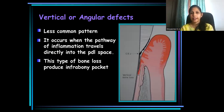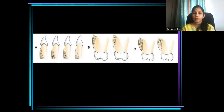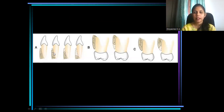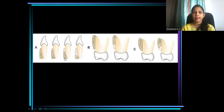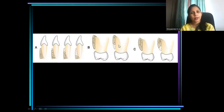Vertical defects or angular defects occur whenever the inflammation travels into the periodontal ligament area, and such bone loss produces an infrabony pocket. Such angular bony defects are not commonly seen in the lower anterior area, because that area usually does not have much cancellous bone — the cortical plates are mostly fused. So angular bony defects do not occur there; horizontal defects are more common in lower anterior areas.